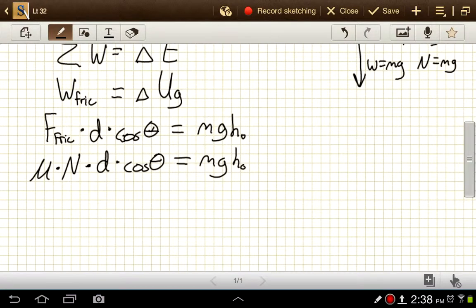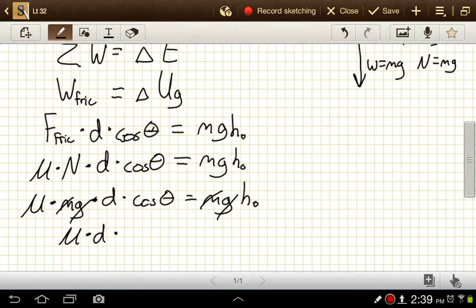So now I'm going to plug that in. Mu equals normal force is mass times gravity, mg, times d times cosine of theta equals mg times h naught. And you see what happened here? We've got an mg over here and an mg over here. So I'll divide both sides by mass and divide both sides by 9.8 meters per second squared and those will cancel.